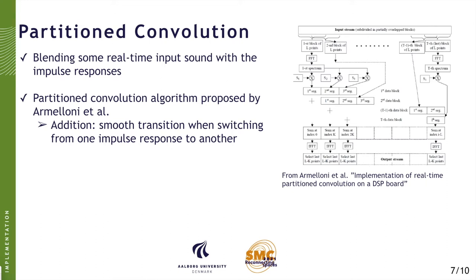Having these impulse responses, we can use convolution to blend a real-time input sound with them and add the spring reverb quality to a dry signal. Since the impulse responses were quite long — about two seconds — a partitioned convolution approach was needed to reduce latency. We used the algorithm proposed by Ahmaloni and others, highlighted in this block diagram. An important feature was smooth switching between different impulse responses without clicks or audio dropouts, achieved by pre-loading all impulse responses and cross-fading between them during transitions.